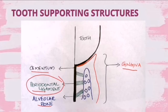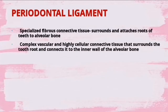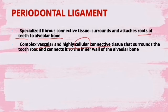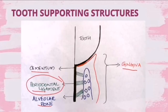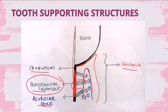Periodontal ligament is a specialized fibrous connective tissue that surrounds and attaches the roots of the teeth to the alveolar bone. It is a complex vascular and highly cellular connective tissue that surrounds the tooth root and connects it to the inner wall of the alveolar bone. In the picture, you can see the cementum on the root surface and the periodontal ligament attaching it to the alveolar bone.